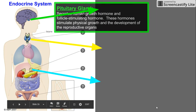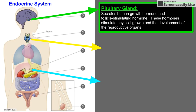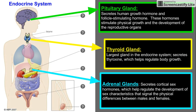The pituitary gland secretes human growth hormone and follicle stimulating hormone. These hormones stimulate physical growth and the development of the reproductive organs. Adrenal glands secrete cortical sex hormones, which help regulate the development of sex characteristics that signal the physical differences between males and females.